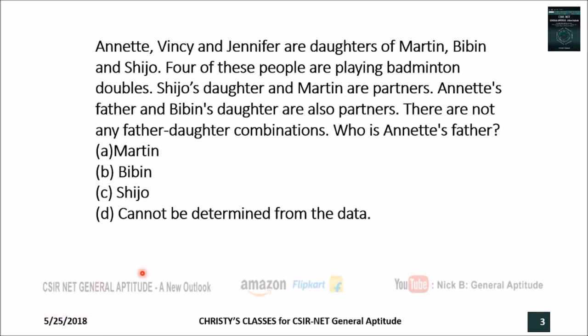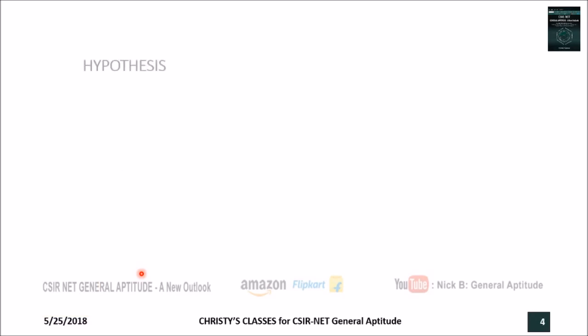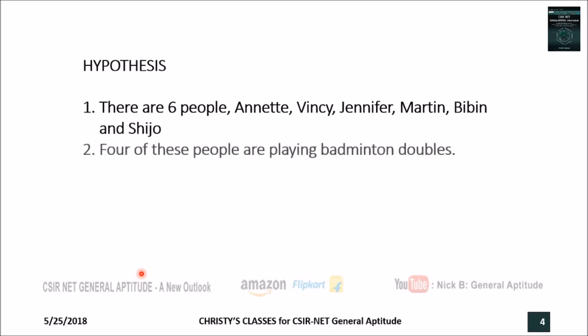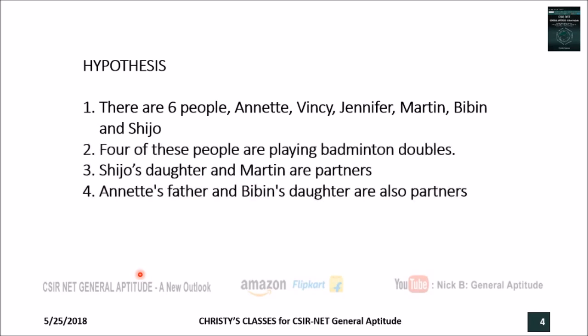The question has six people — three male: Martin, Bibin, and Shijo; three female: Annette, Wincy, and Jennifer. Four of them are playing badminton doubles. Shijo's daughter and Martin are partners, meaning they play on the same side of the court. Annette's father and Bibin's daughter are also partners on the other side. The condition is there is no father-daughter combination — a father and his daughter cannot be on the same side of the court.